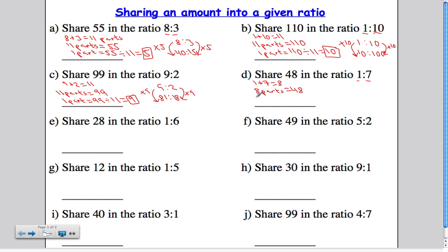Next step, work out one part. One part is going to be 48 divided by 8. 48 divided by 8 is 6. This is the important number.